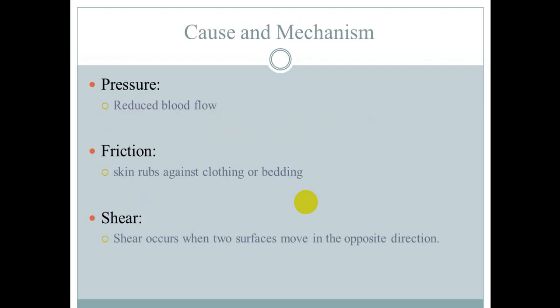Now I am going to talk about causes and mechanisms. The first cause is pressure on the skin and underlying tissue, which affects blood flow and blood circulation, leading to redness and pressure sores.